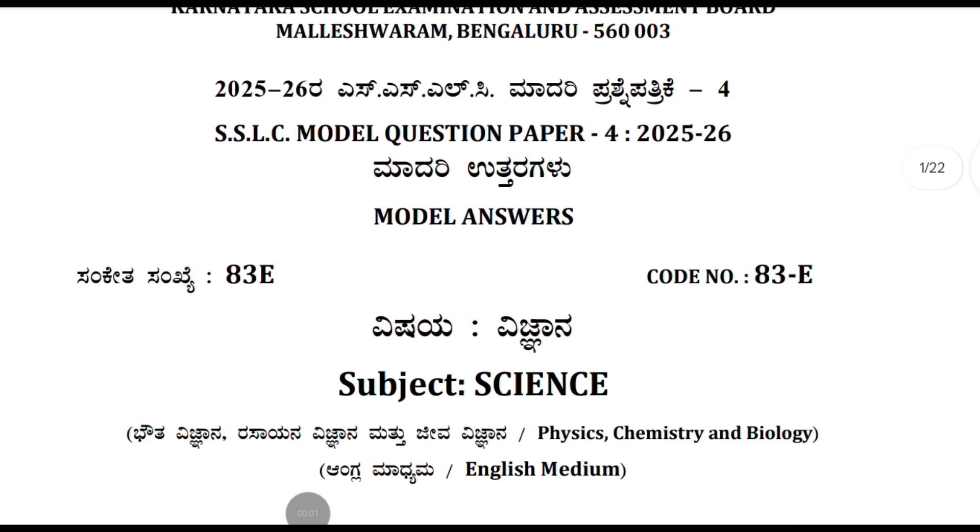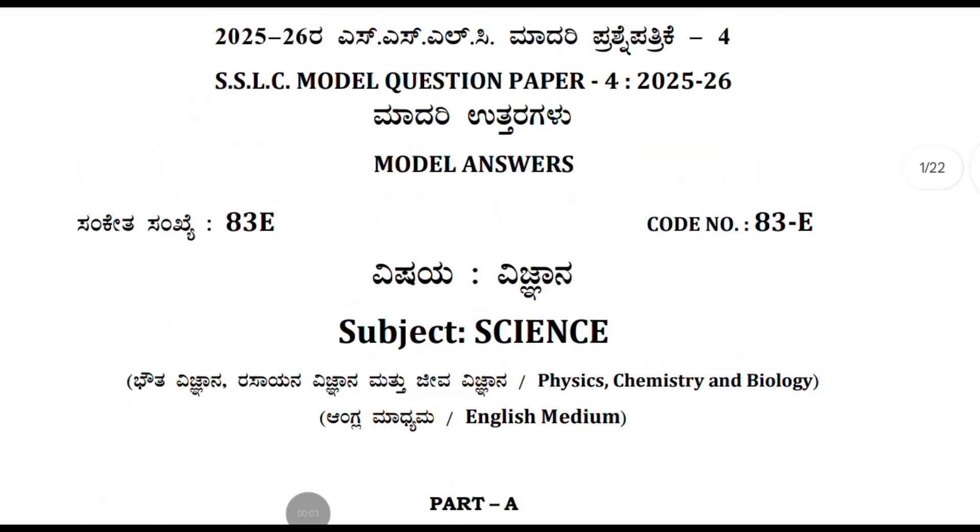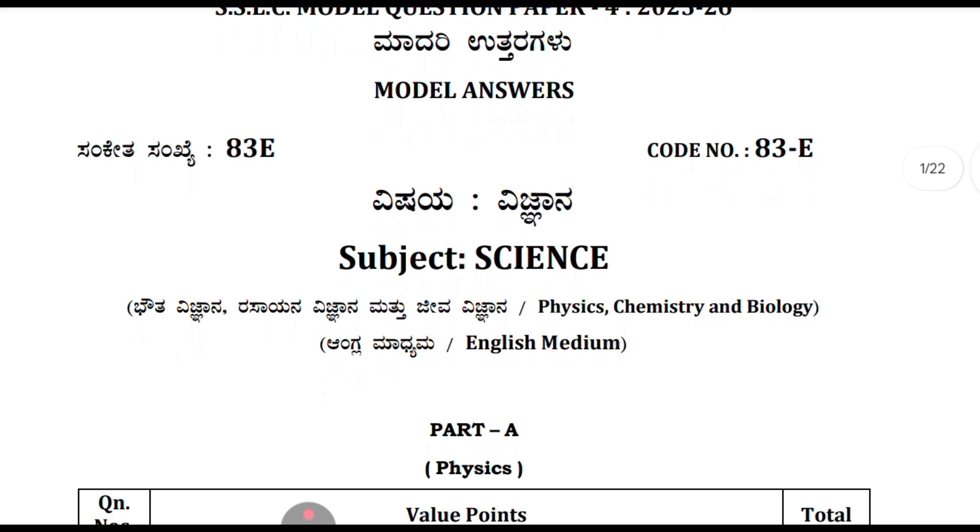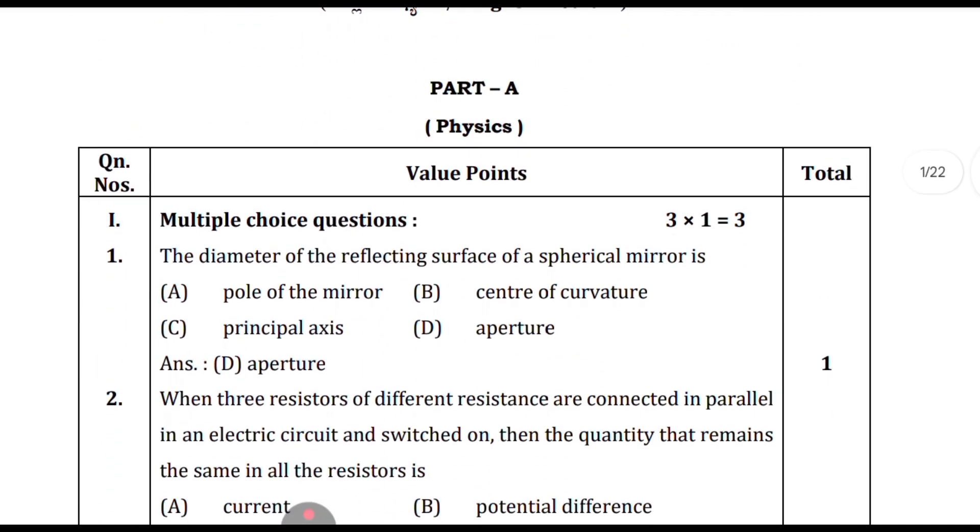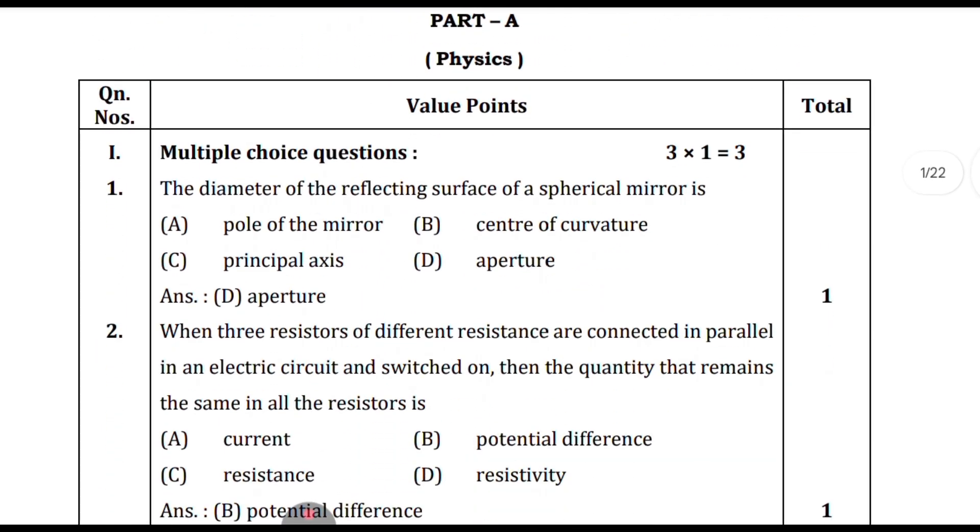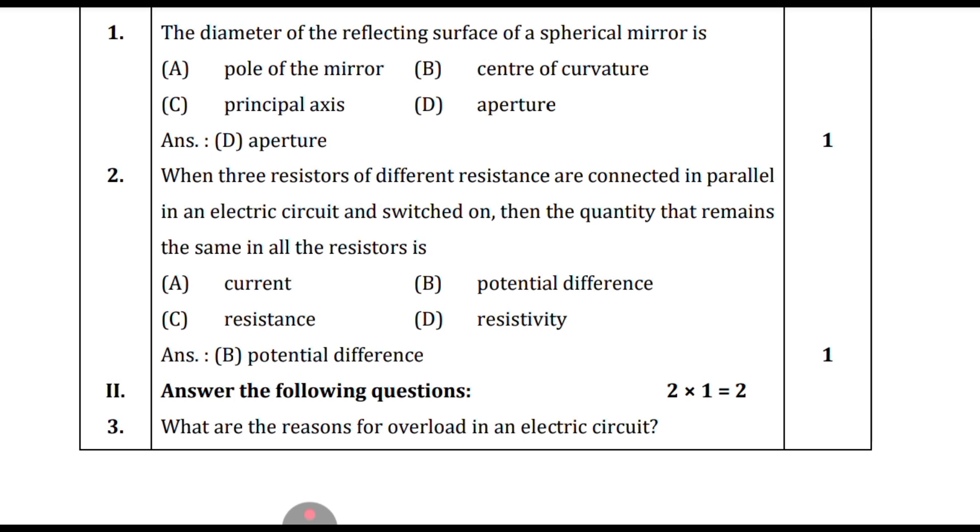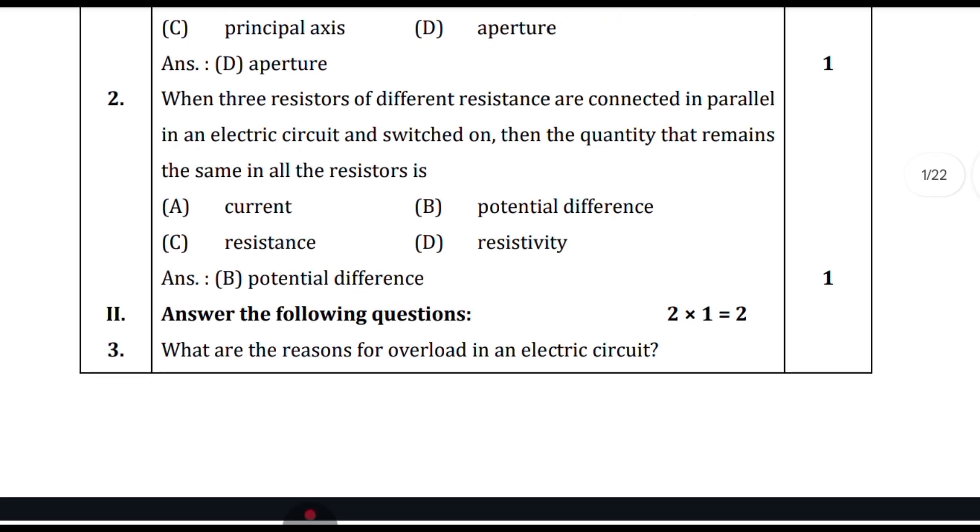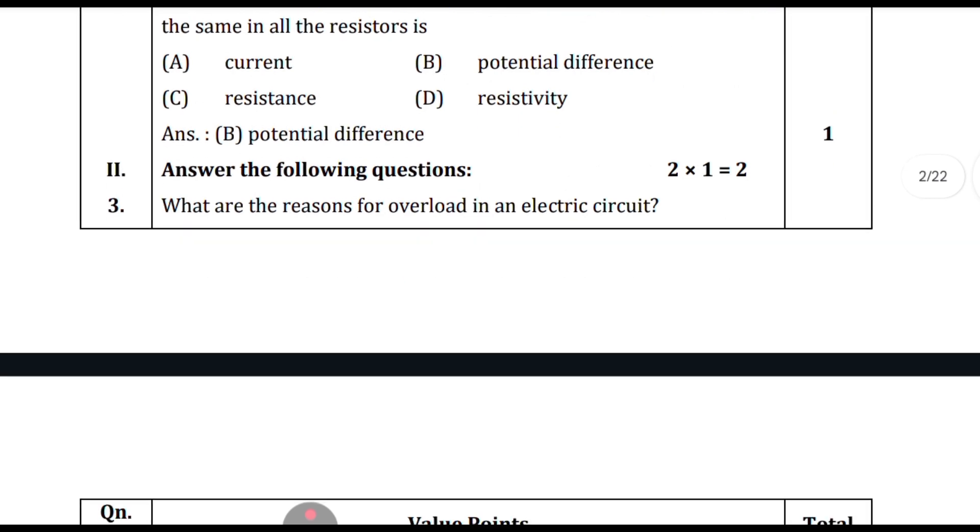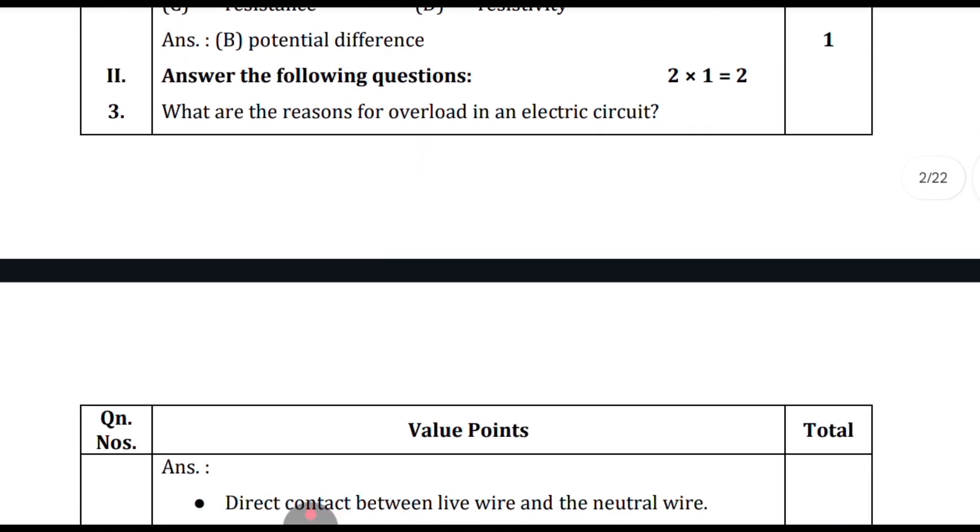This is the 4th model question paper for the subject science of the year 2025-26. The first section is physics. The diameter of the reflecting surface of a spherical mirror is the aperture. When three resistors of different resistances are connected in parallel in an electric circuit, the quantity that remains the same in all the resistors is potential difference.